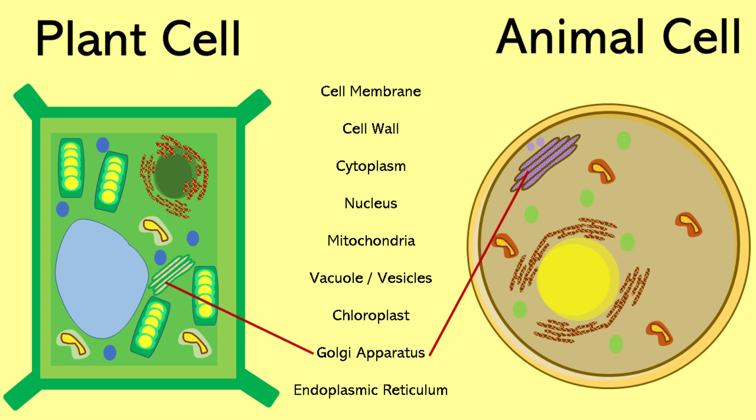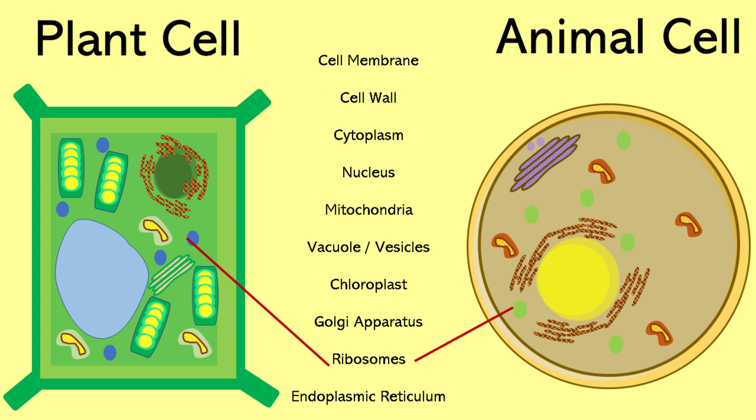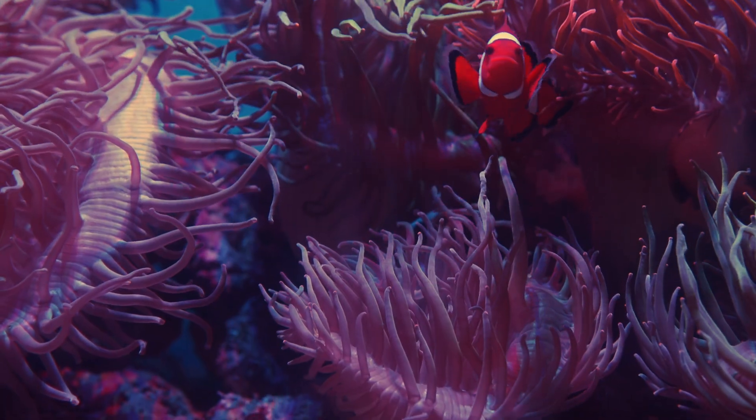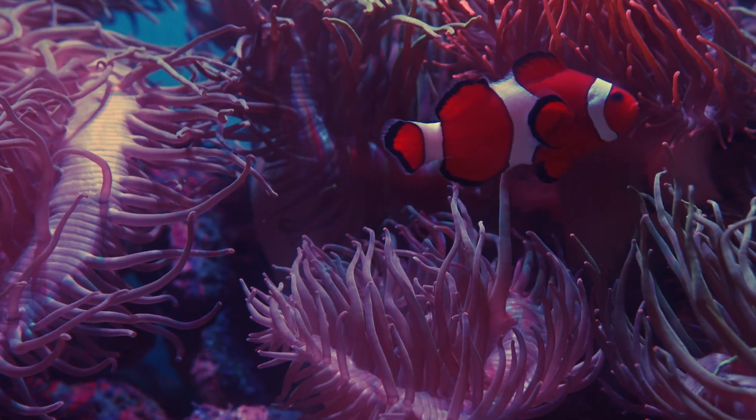Cells also contain the Golgi apparatus. These organelles package and ship out things the cells make. Ribosomes are tiny machines that make proteins, which are super important for the cell. Endoplasmic reticulum, often called ER, helps make and move proteins and other important things the cells need.